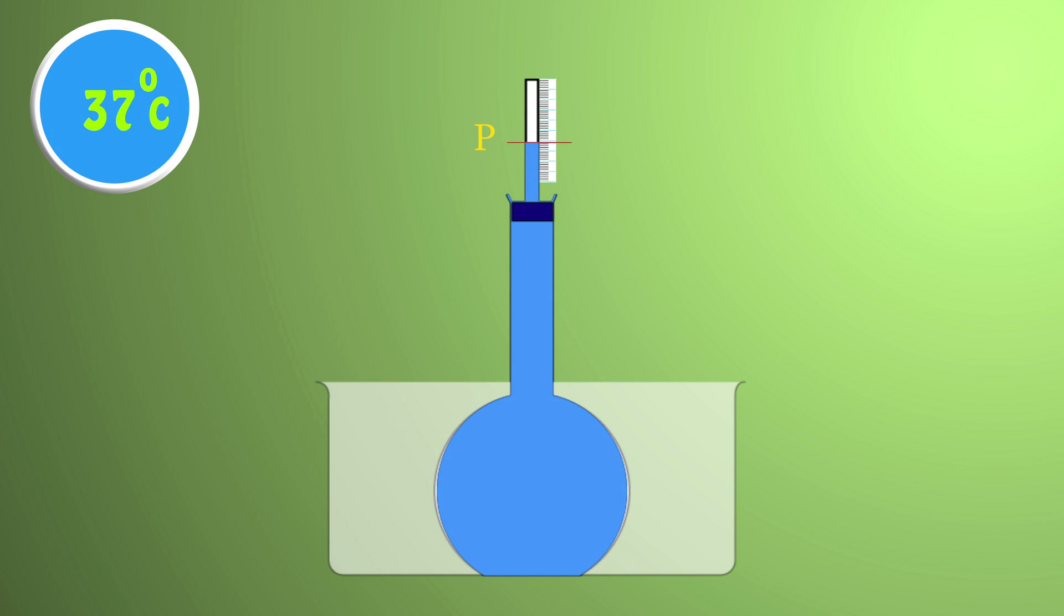Now place the flask in a metal trough. Pour water in the trough and heat till it starts boiling.